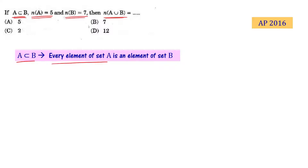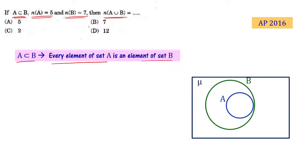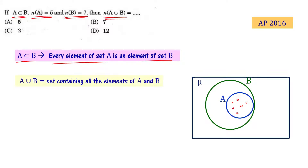Since A is a subset of B, every element of set A is also an element of set B. A∪B is the set containing all the elements of A and B. The shaded portion in the Venn diagram representing A∪B is entirely within B.